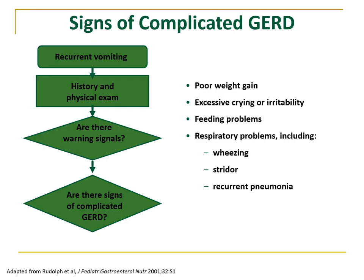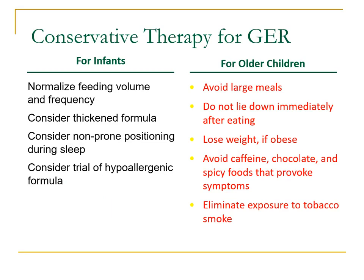Signs of complicated GERD include poor weight gain, excessive crying or irritability, and feeding problems. If the patient has severe esophagitis, babies may refuse to feed because each feeding increases stomach acidity and further injures the already inflamed area, causing them to refuse eating. Respiratory problems such as recurrent wheezing, stridor, or recurrent pneumonias are also suggestive of complicated GERD.